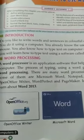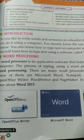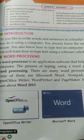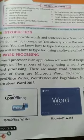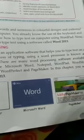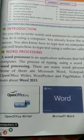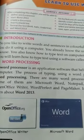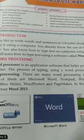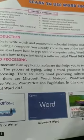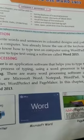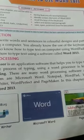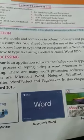So how can you do this with the help of your hands? It will take too much time, so you do it using a computer. You already know the use of the keyboard and a mouse. You also know how to type text on computer using WordPad. Now you will learn how to type text using a software called Word 2013. That means Word 2013 is a software.